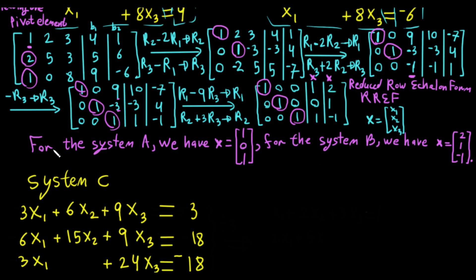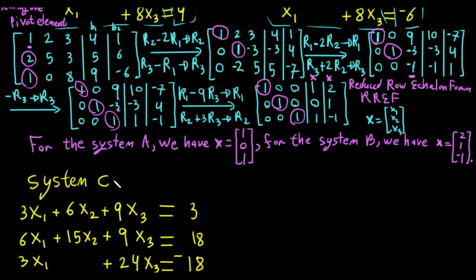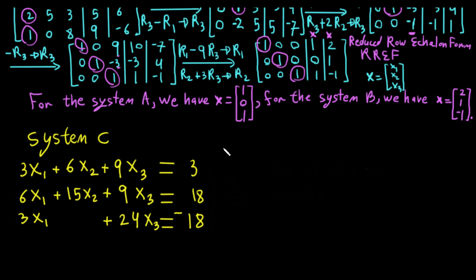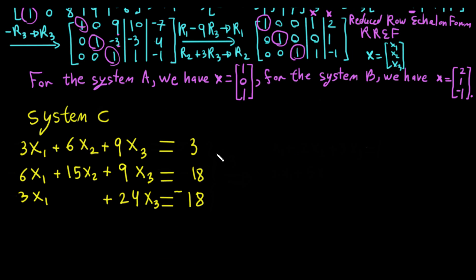If we divide the coefficients by 3, they will be the same as the other system. Therefore we can put them in an augmented matrix. So let's divide the whole system by 3.